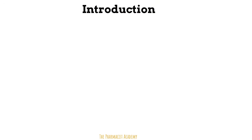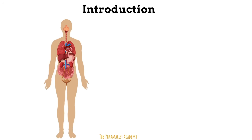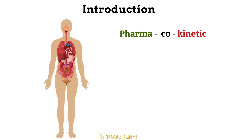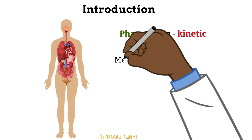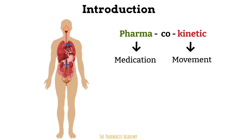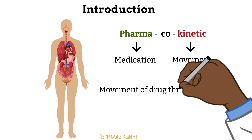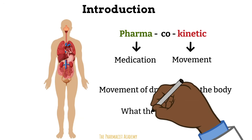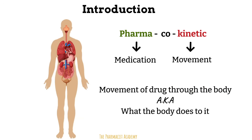Keeping a visualization of the human body in our head, PK can be broken down into two: pharma and kinetic. Pharma means medication and kinetic refers to movement. So it's basically the movement of drugs through the body. Sometimes we refer to it as what the body does to the drug from the time it enters the body till it's excreted.